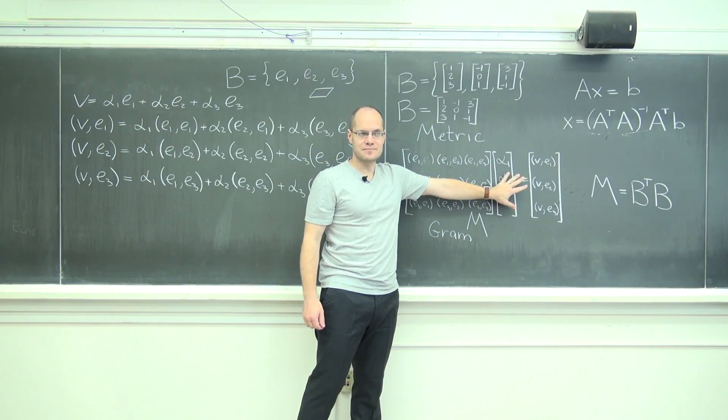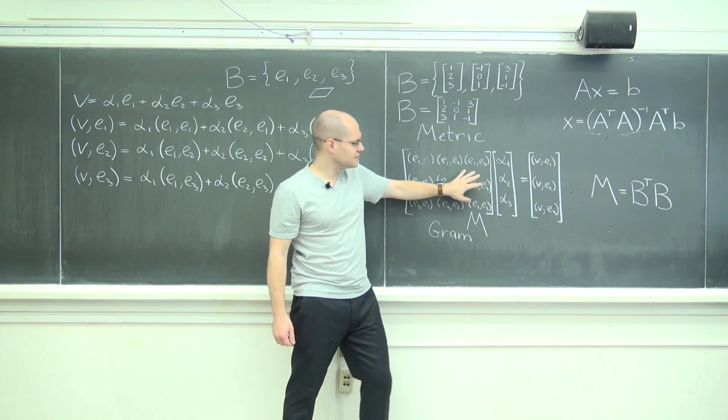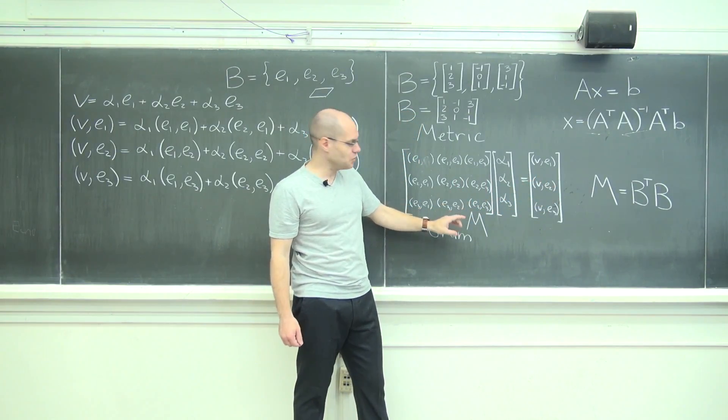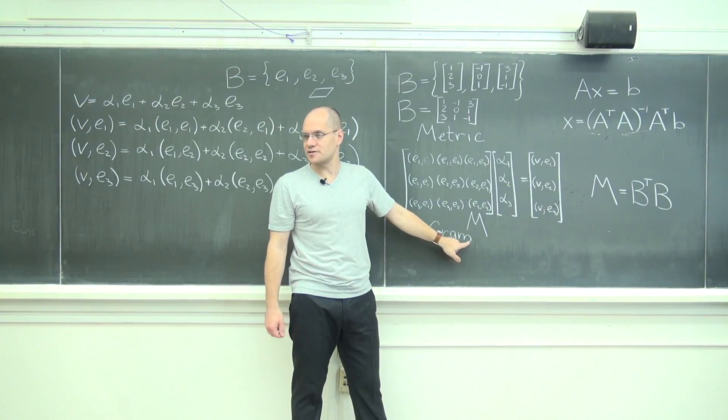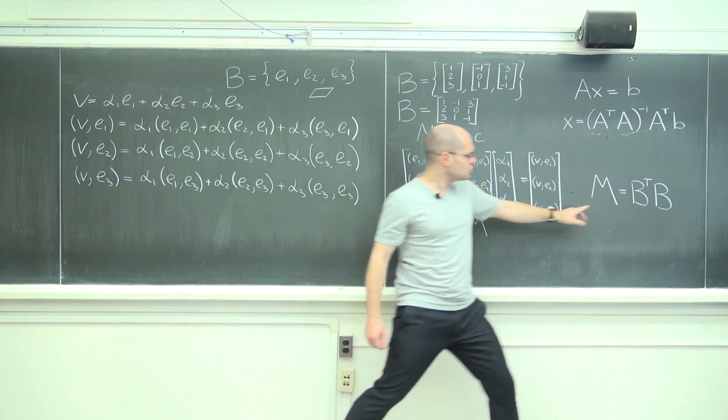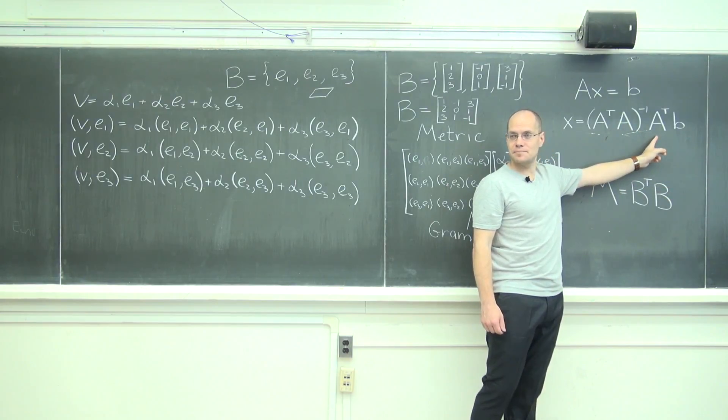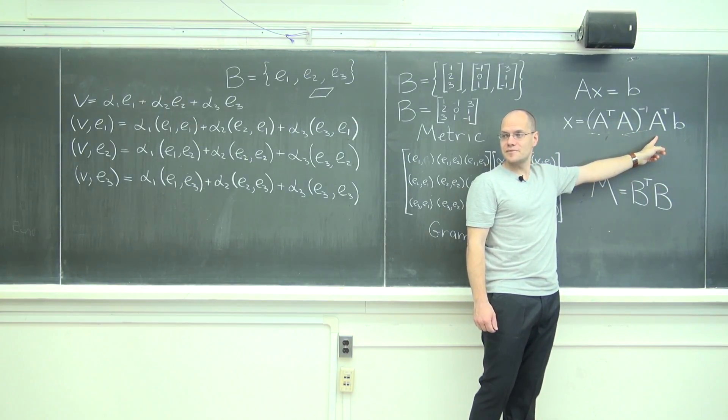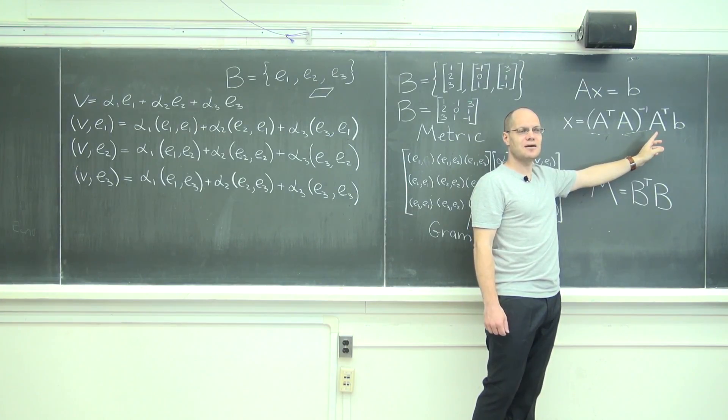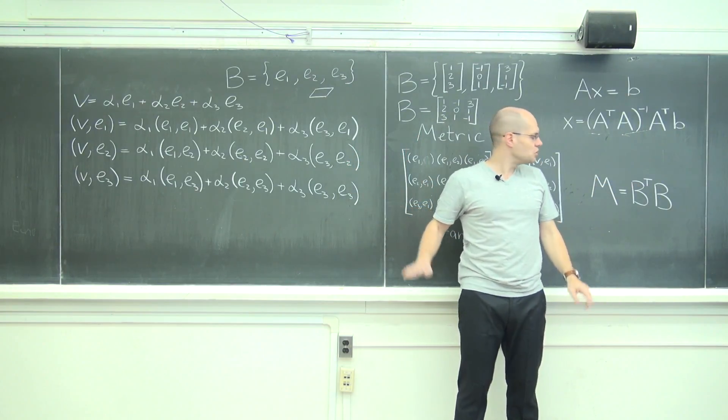And so to actually solve this problem, what's the answer? It's M inverse times this right-hand side, right? So in solving this problem we have to invert the metric—we have to invert the matrix, the metric. So it's going to be (B transpose B) inverse. And now do you see how this is beginning to take on an additional meaning of what's happening here?